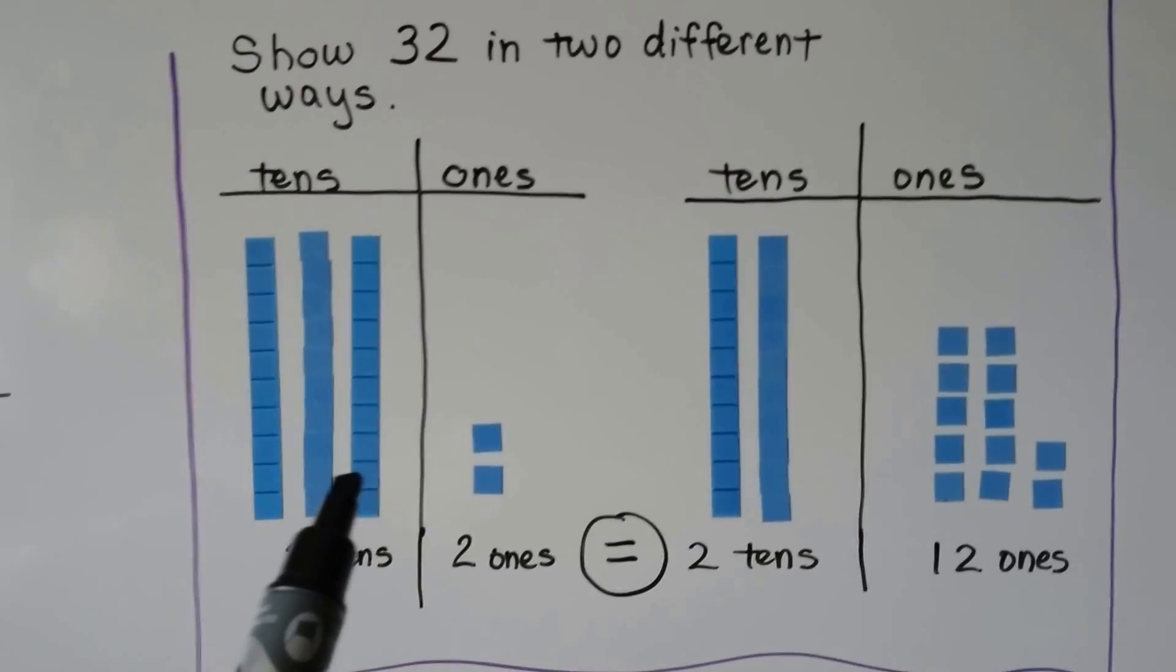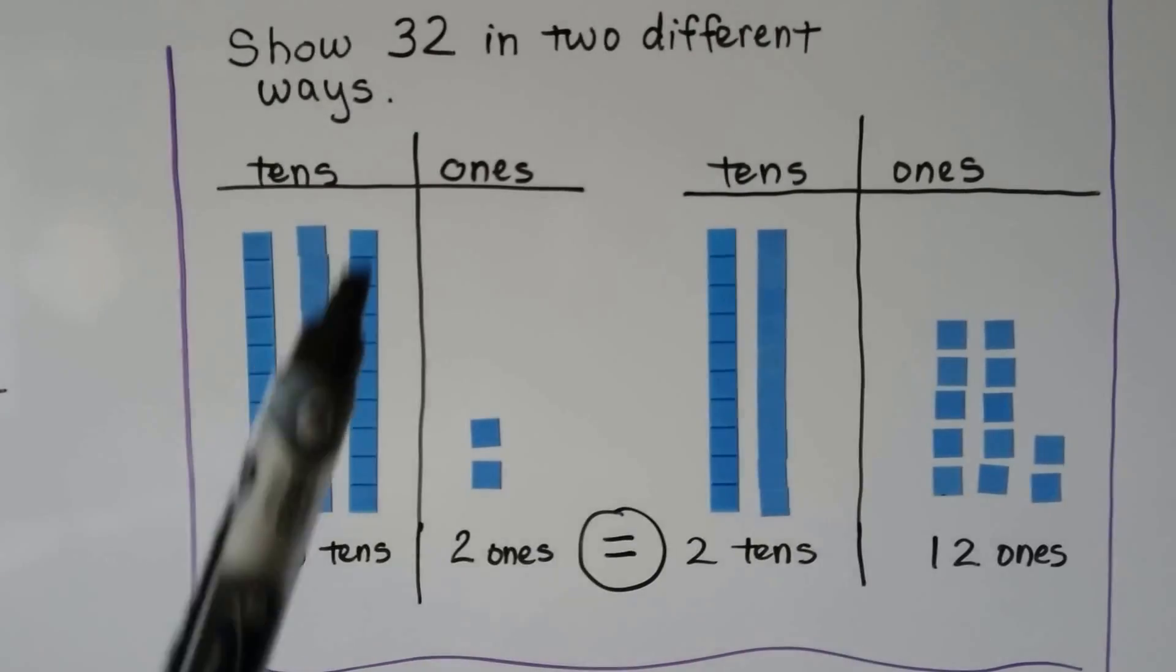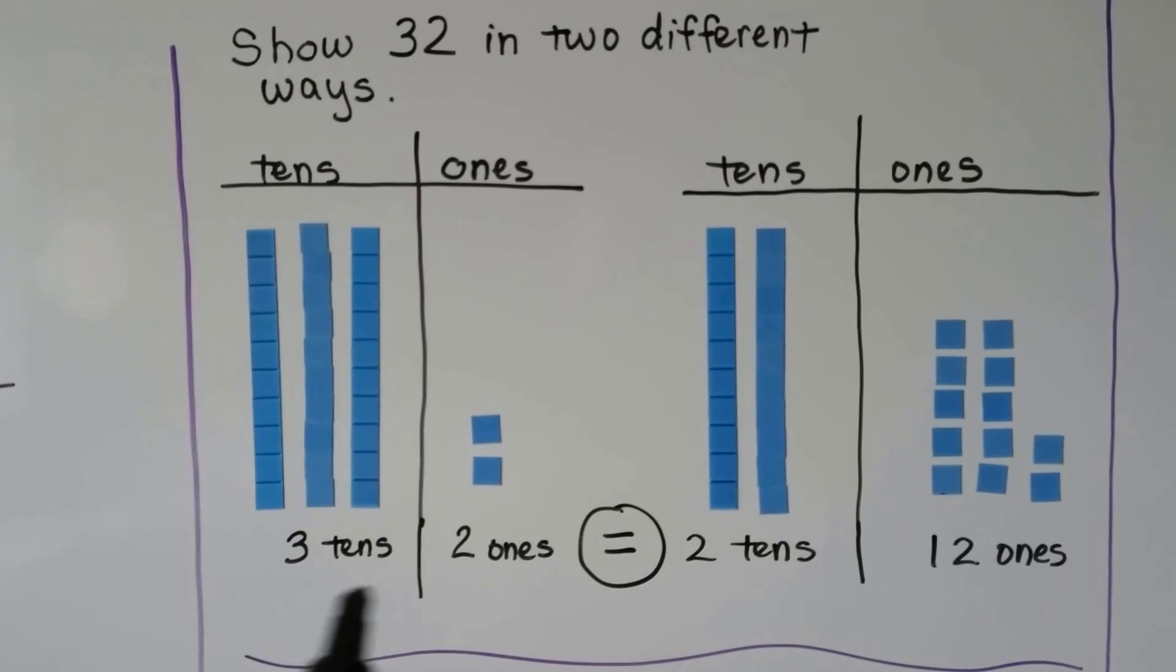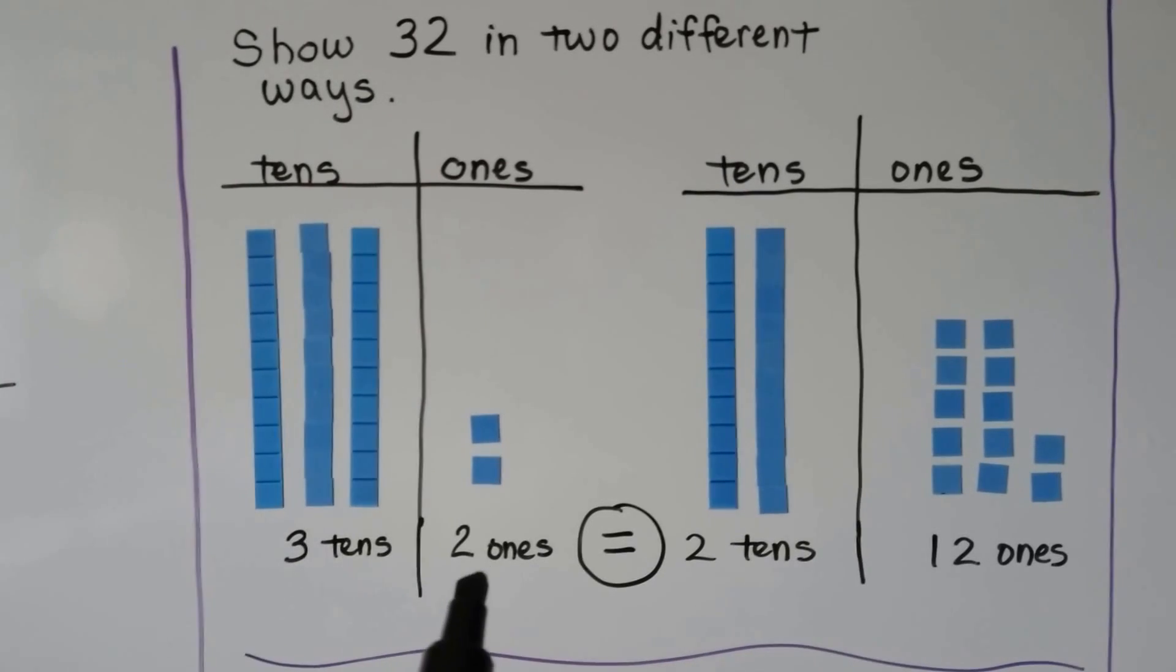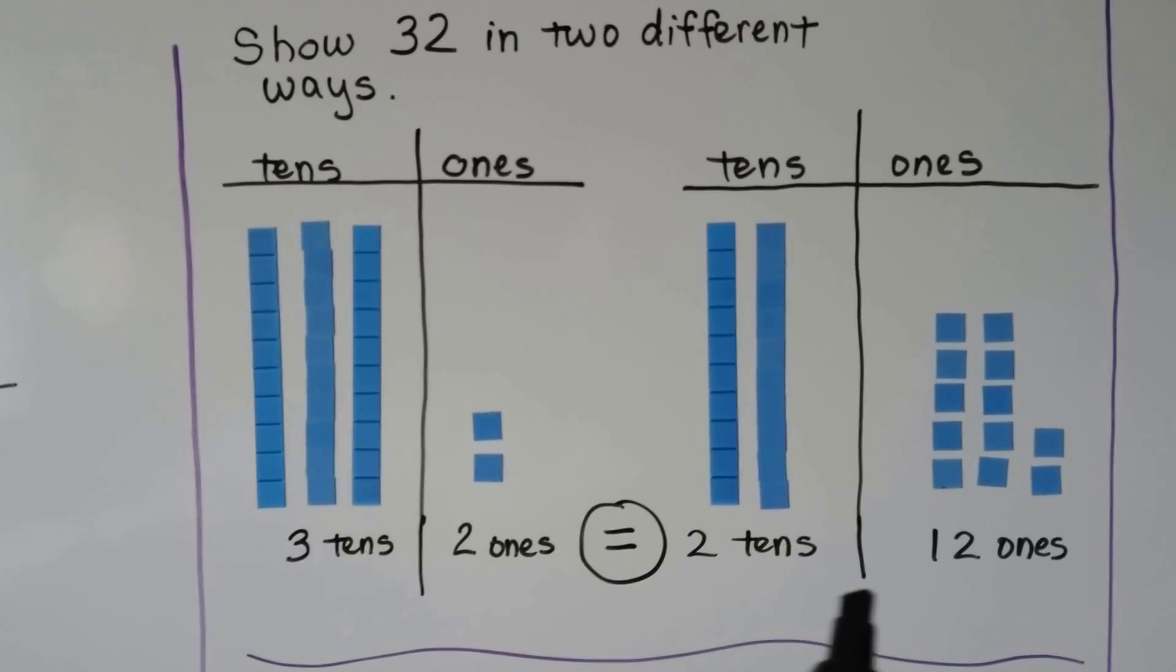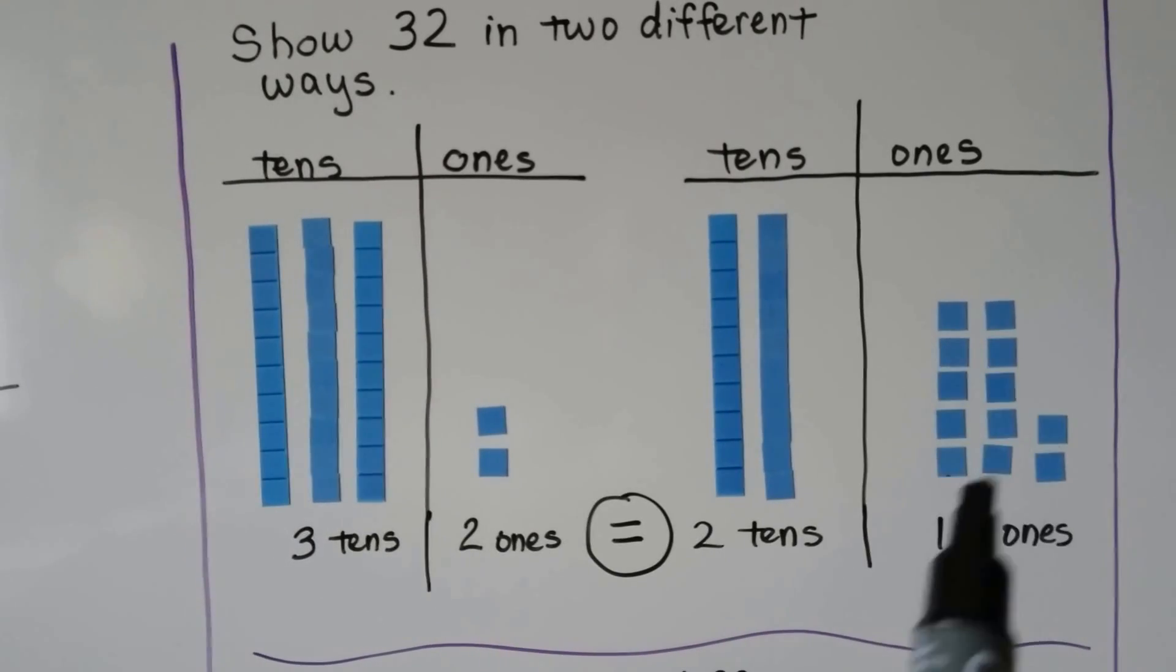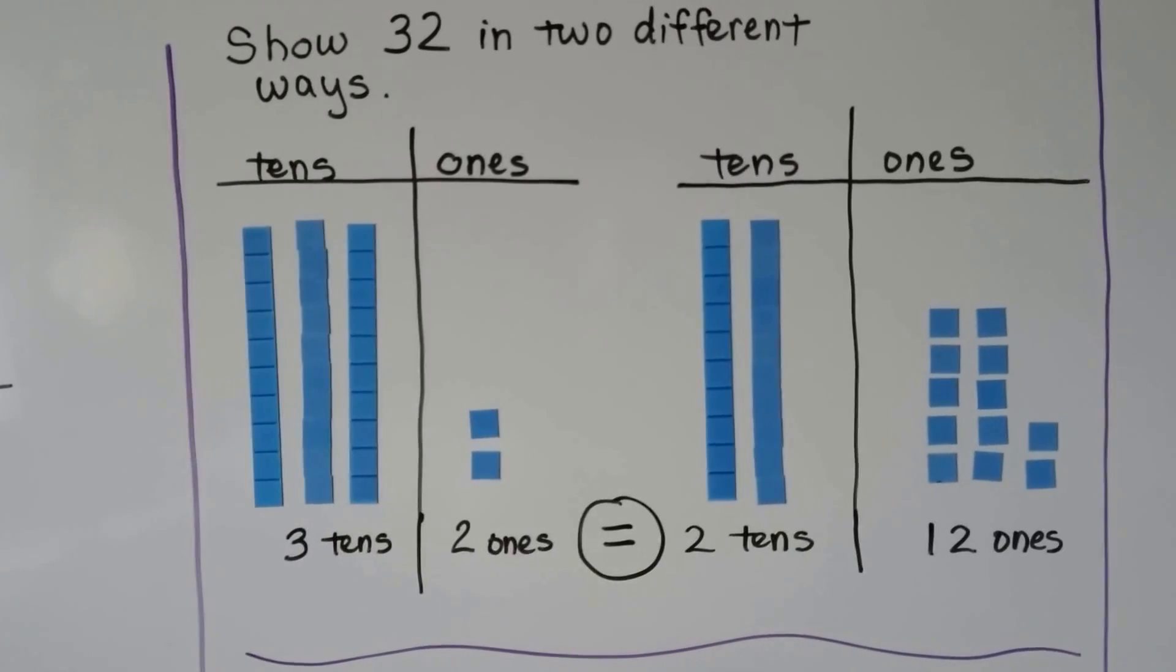Or we can take one of these tens and break it up into 10 ones and put it on the one side. Here we have 3 tens and 2 ones. And here we have 2 tens and 12 ones. Because that 10 was broken up and taken from the tens.